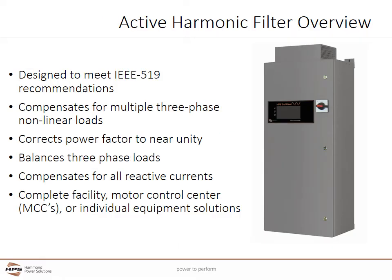One method to mitigate harmonic currents produced by three-phase sources, most commonly variable frequency drives, is to use an active harmonic filter. Active harmonic filters are very similar to a variable frequency drive in the components they have, but rather than powering motors, they are designed to inject harmonic currents that are equal but opposite to the system's harmonic currents to cancel out these harmonics. Active harmonic filters are designed to meet IEEE 519 recommendations and are usually combined with line reactors and DC link chokes at the variable frequency drive. Active harmonic filters compensate for multiple three-phase nonlinear loads.